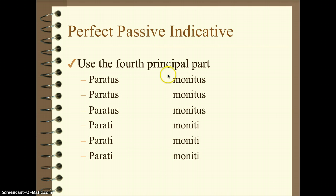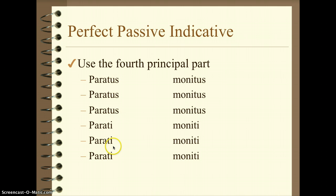And then we have monere, monui, monitos, and we see it here again in the masculine. This does change a tiny bit from the first three to the second three, because the first three in any verb conjugation are singular. So we use a singular masculine ending: us, us, us. And then we use a plural masculine ending for the other ones: e, e, e. These are all second declension nominative forms — nominative singular us, nominative plural e.